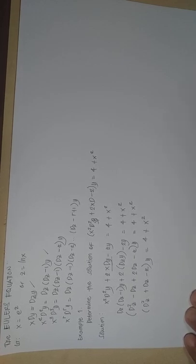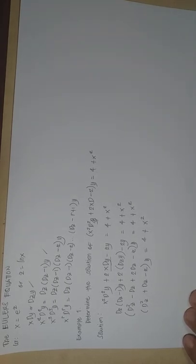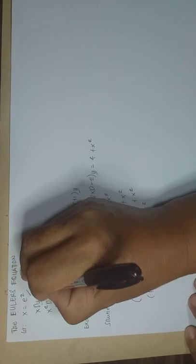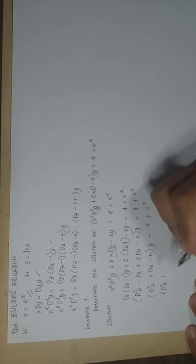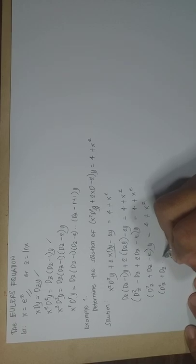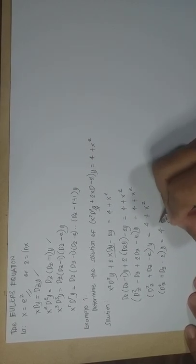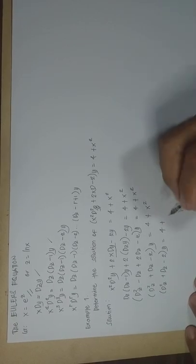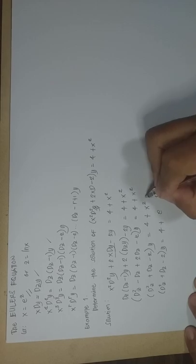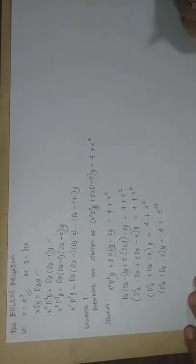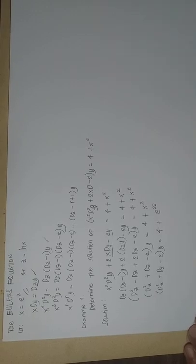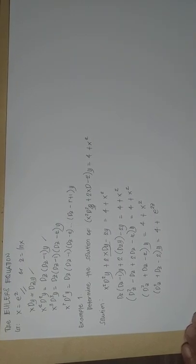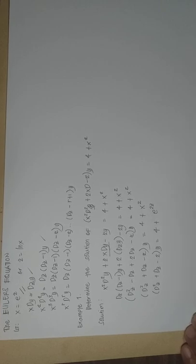In the substitution, x is equivalent to e to the z. So we may write this as: (Dz² + Dz − 2)y = 4 + (e^z)² = 4 + e^(2z). We now have a linear equation with constant coefficients.